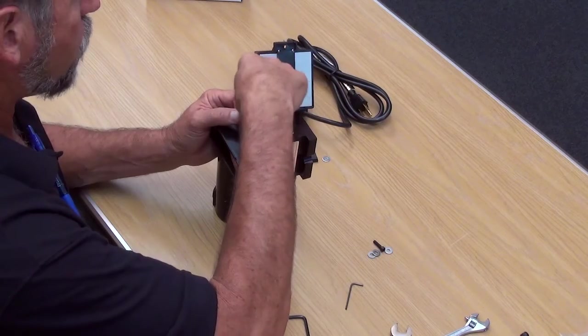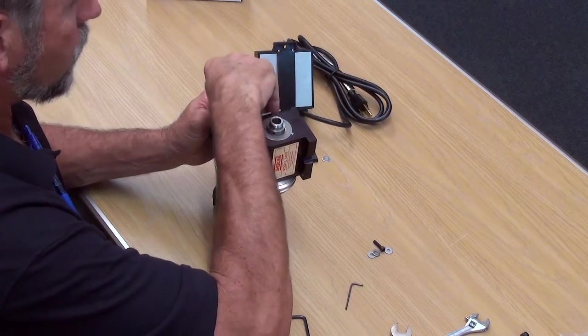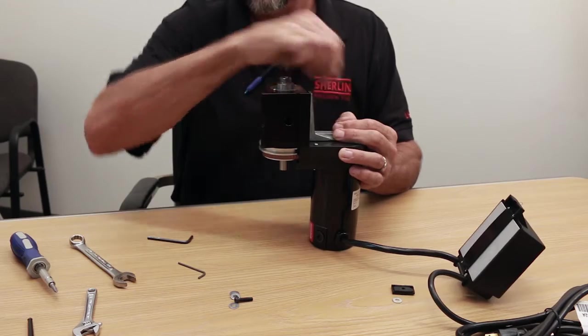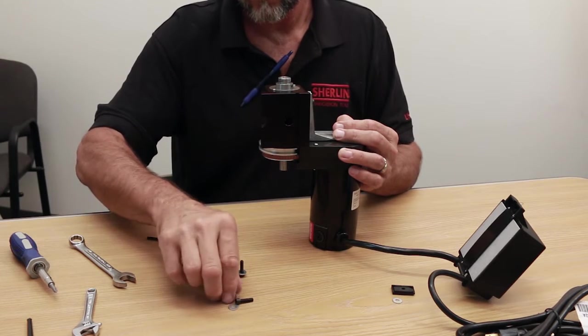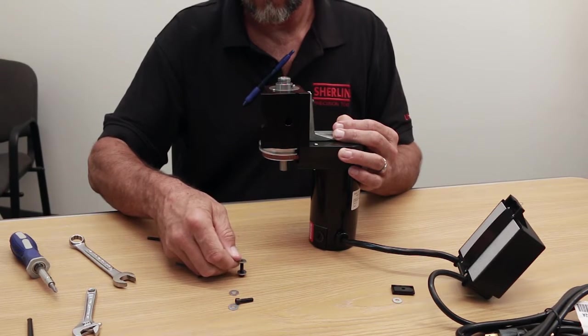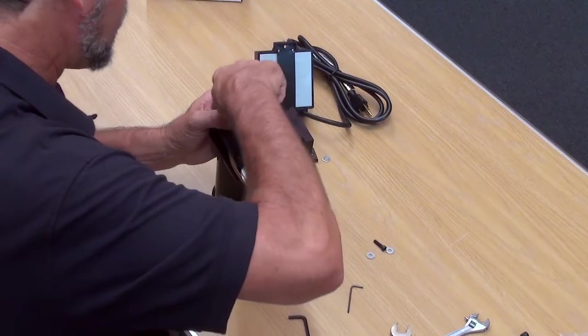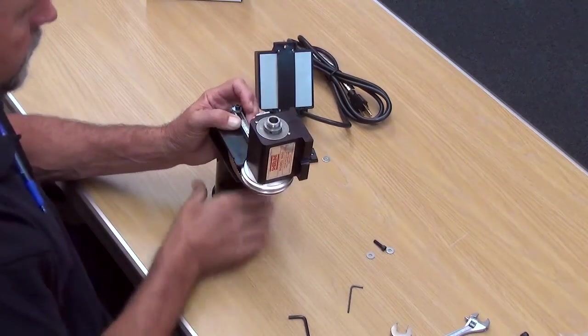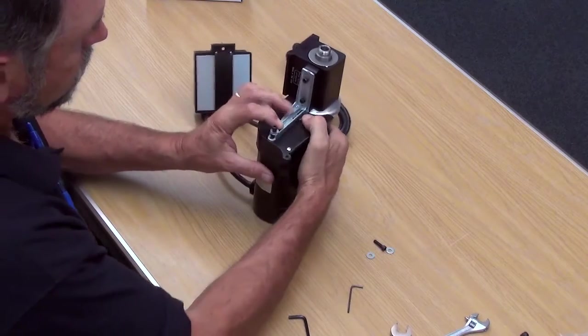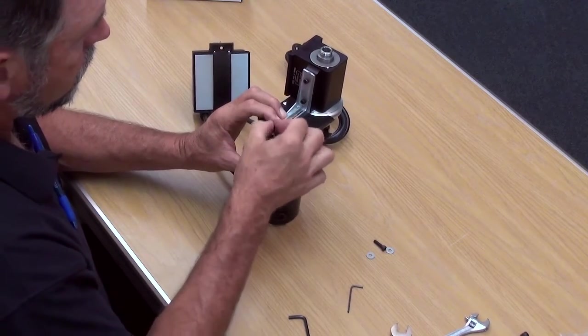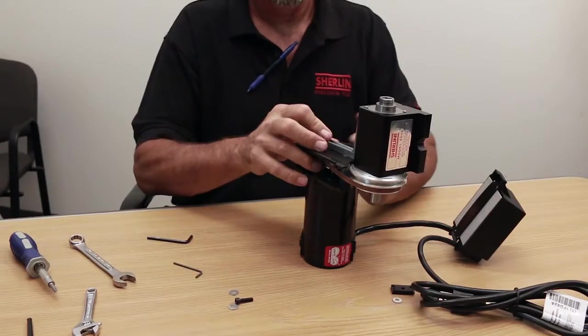Each of the screws gets two washers on it. Put two washers on here. Line it up by eye. Just get it started again. This way. Just get it started. That one's in.